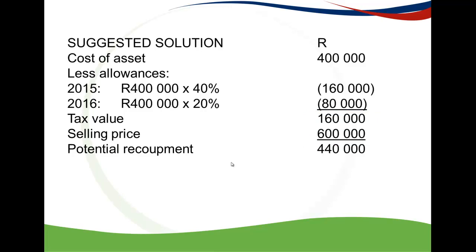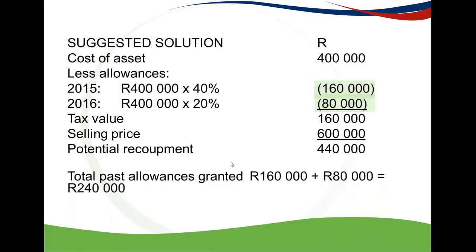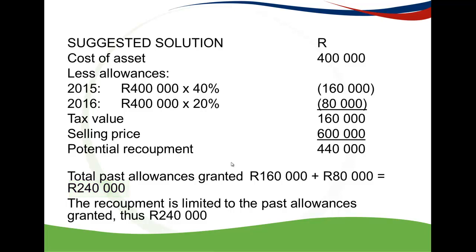Remember, your recoupment is limited to the past allowances granted. In 2015 we had a R160,000 allowance and in 2016 we had a R80,000 allowance, so the total past allowances granted is R240,000. Therefore, the recoupment is limited to R240,000. This recoupment is then added into your taxable income. So on this asset in the 2016 year of assessment, you get an R80,000 allowance and an add-back of R240,000.